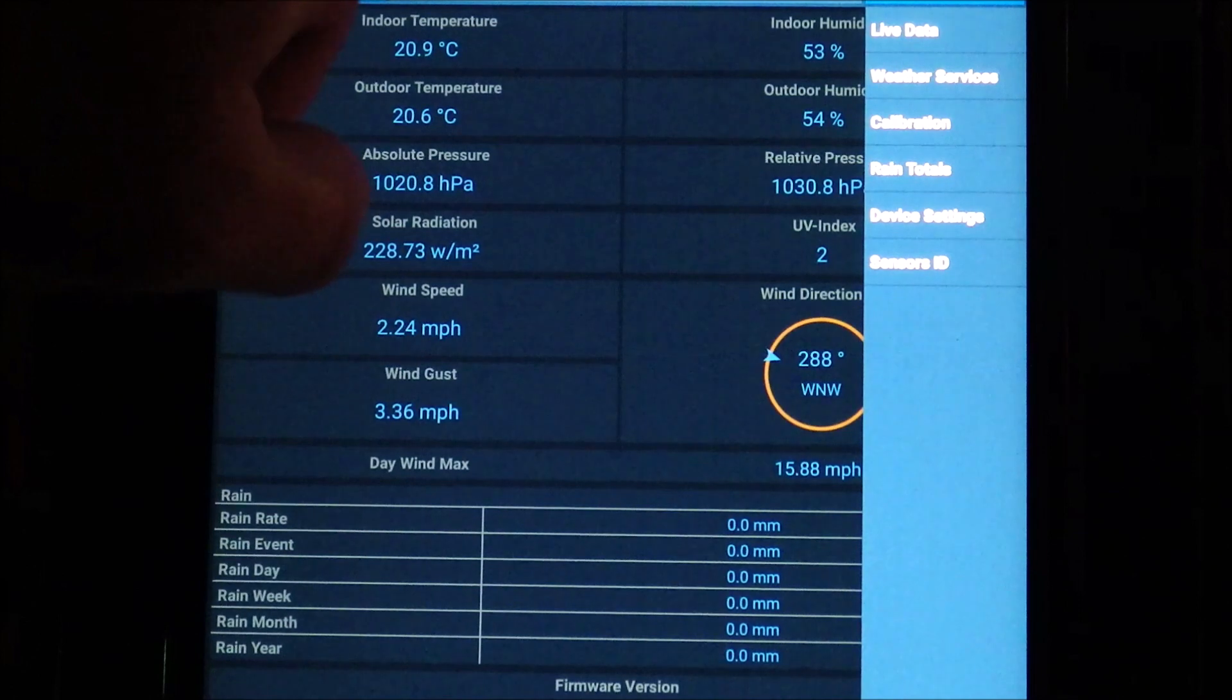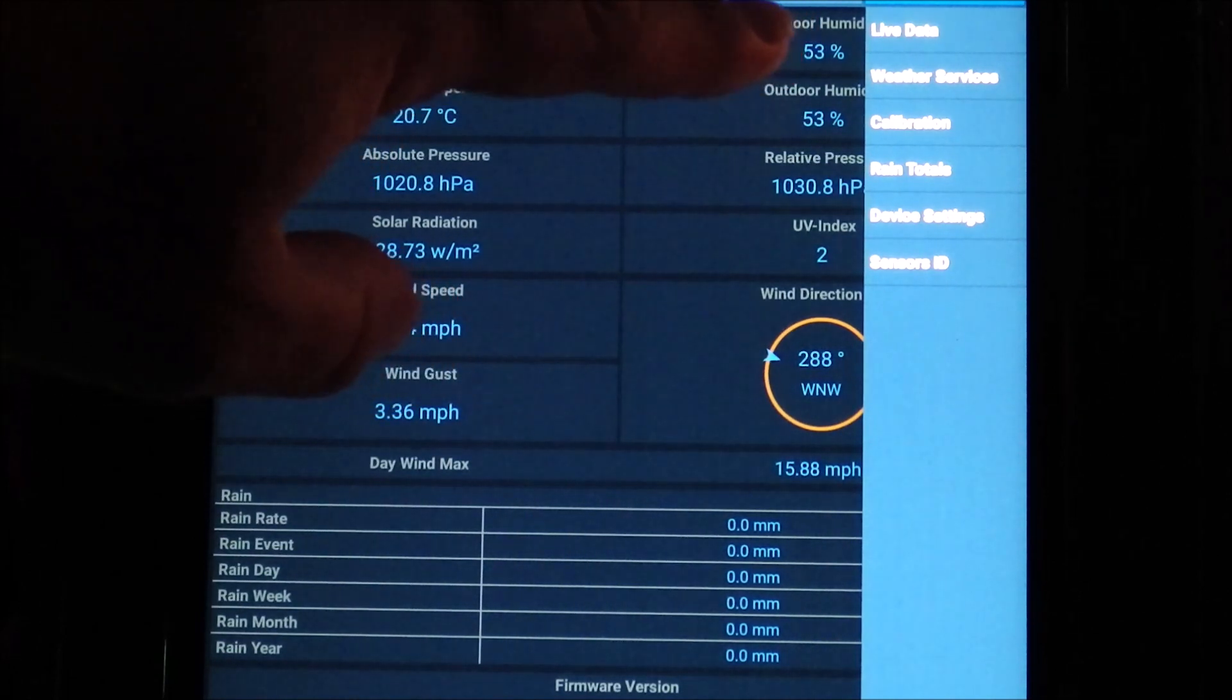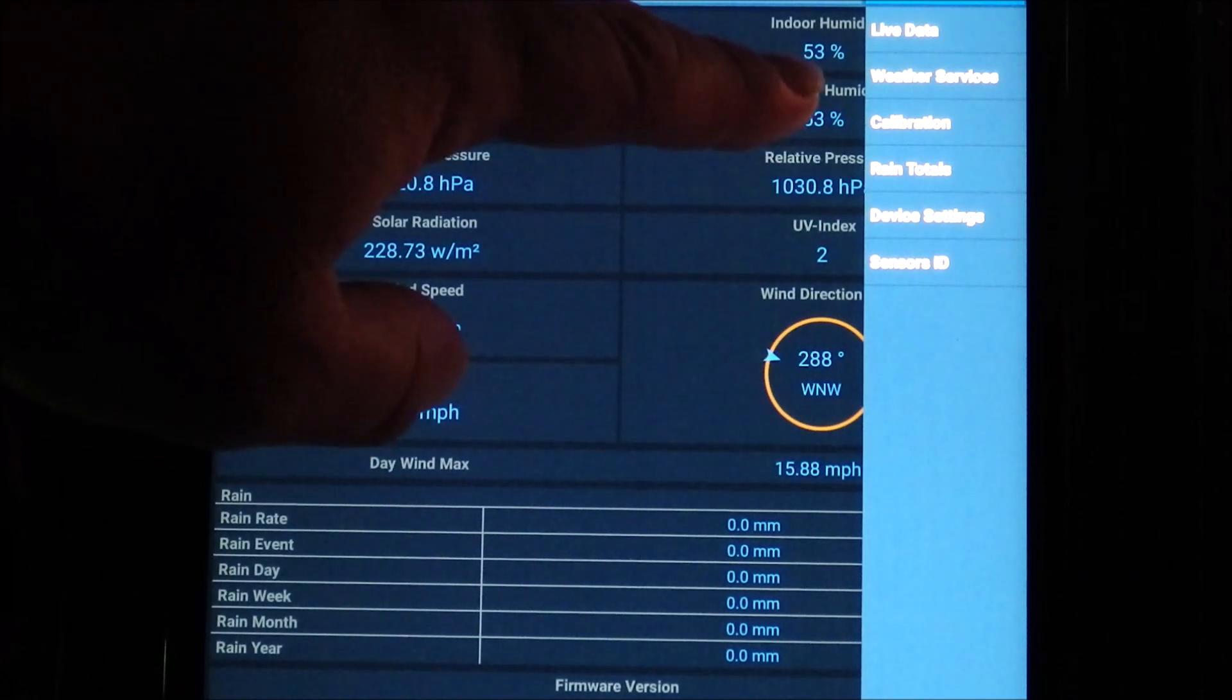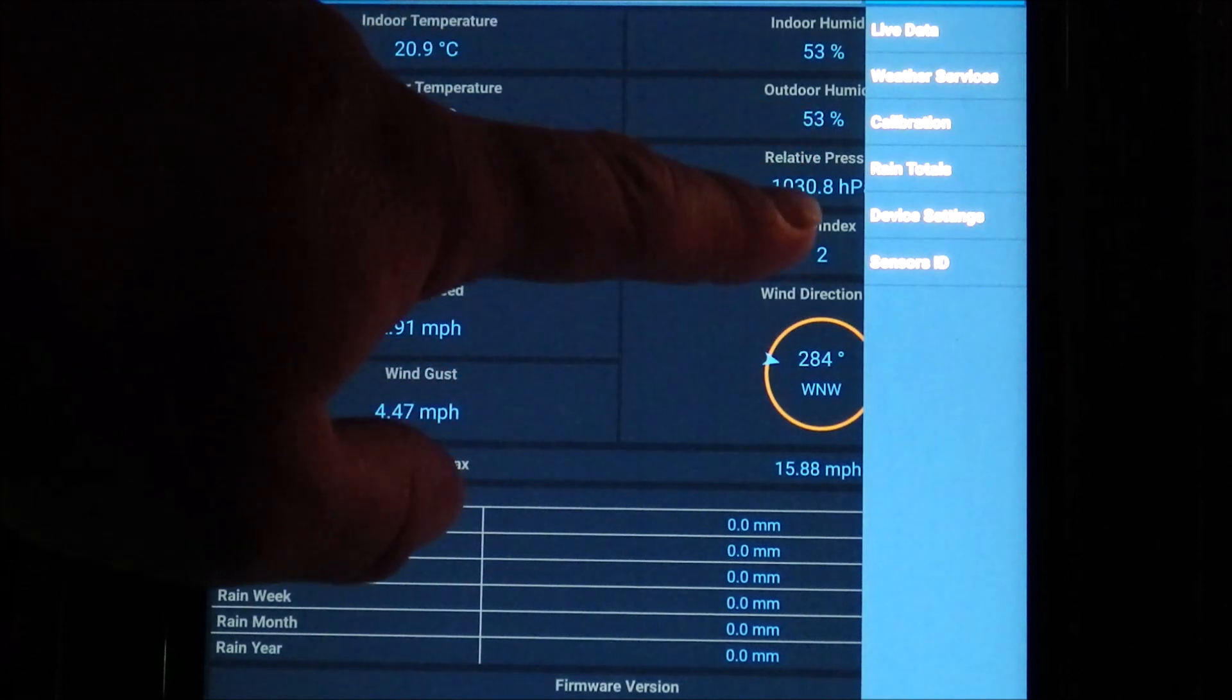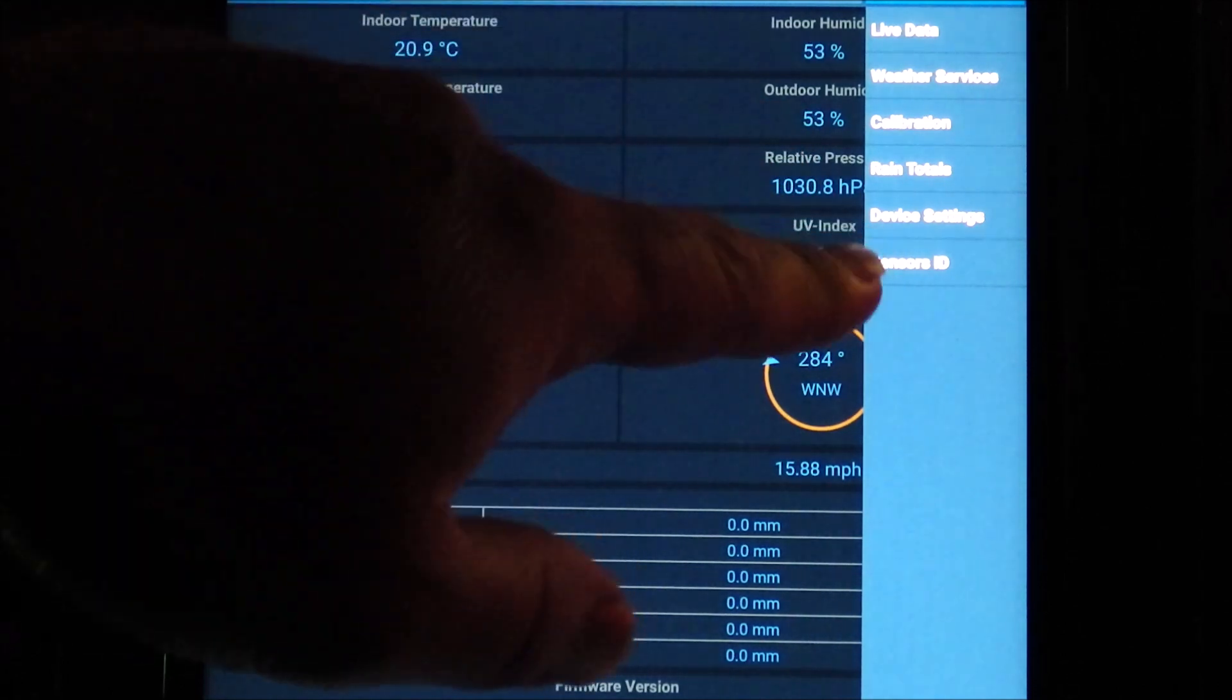The side menu in this screen has several options. You can go to weather services for uploading your weather data to the EcoWIT website and others, calibration so you can adjust parameters up or down, rain totals which you can set or change, device settings specific to this device, and sensors ID.